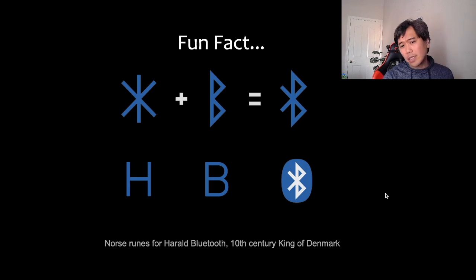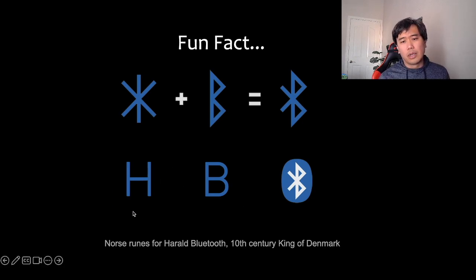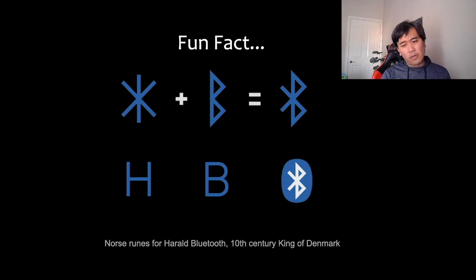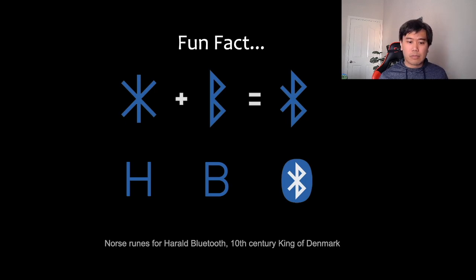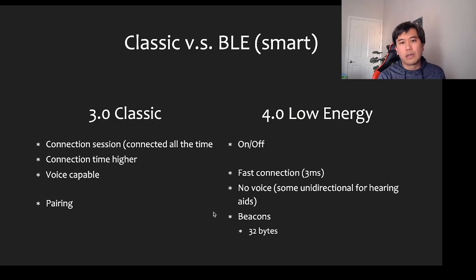The Bluetooth symbol is a combination of Norse rune alphabet letters H and B, corresponding to Harold Bluetooth, a 10th-century king of Denmark. He helped unify different tribes and kingdoms in Denmark — that's why Bluetooth represents unifying all these different devices and communicating with them.